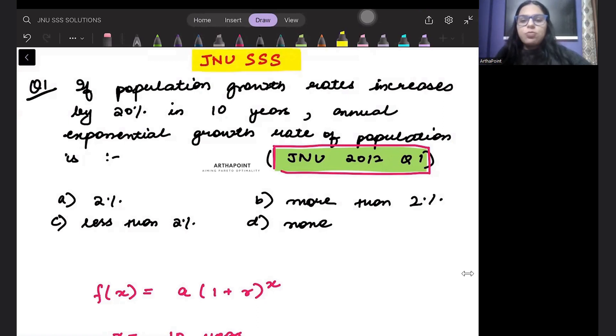If population growth rate increases by 20% in 10 years, what is the annual exponential growth rate of population? How much is the annual exponential growth rate?